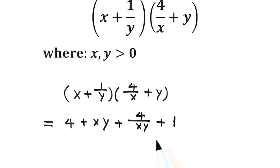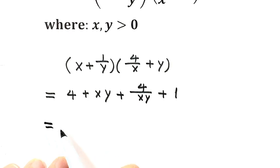Combine these two together. Then equals 5 plus xy plus 4 over xy.